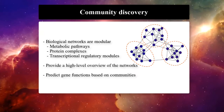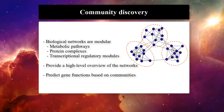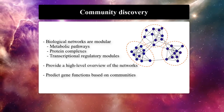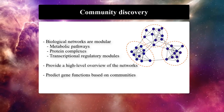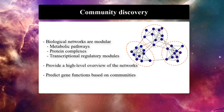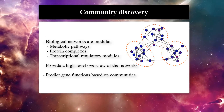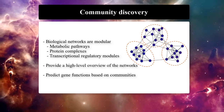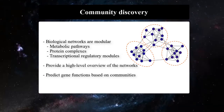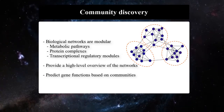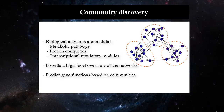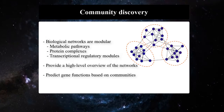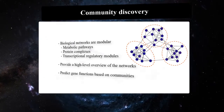Biological networks are modular. Therefore, one can try to find highly clustered subgraphs of the biological network to get a high-level overview of it. This also allows us to predict unknown gene or protein functions based on its communities. Diverse algorithms and methods ranging from simple K-means clustering to Markov chain-based models have been suggested in literature to find these modules and communities in a complex network.